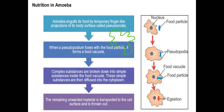These are finger-like projections. Because amoeba has no fixed shape, these projections are basically pseudopodia. The pseudopodia help them to move. Pseudopodium means 'false foot.' The pseudopodia can fuse with a food particle.